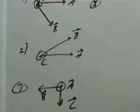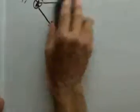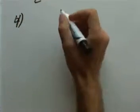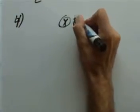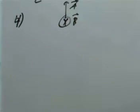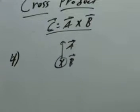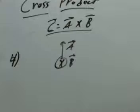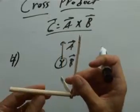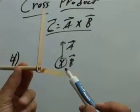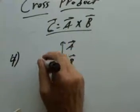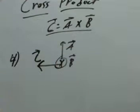Let's do one more example. Suppose vector B is going into the page, and A is pointing straight up. I'm just picking these examples at random. So once again, I'm not going to panic about where C is. I get my model out and say: there's A pointing straight up. B is into the page, so I rotate the whole thing so that the B vector points down into the page. It looks like my C vector is pointing over to the right. So the answer to this cross product is that vector C points to the right.